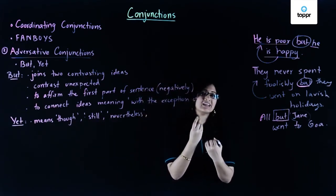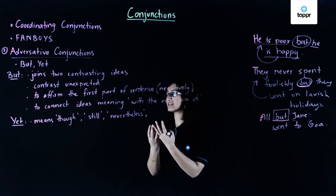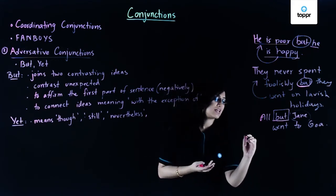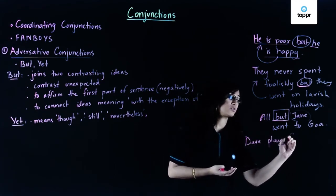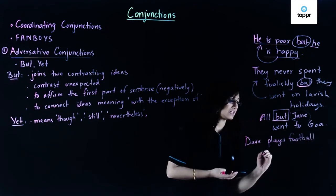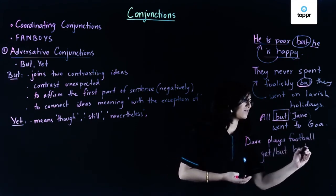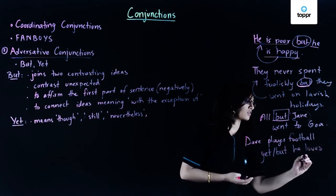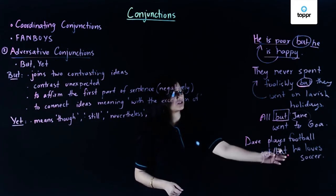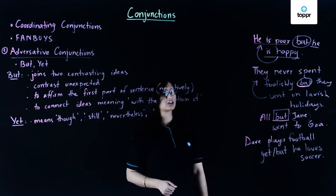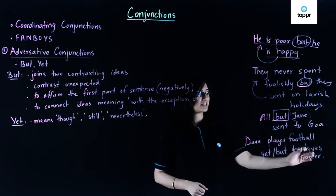So the contrast here is a little less similar to the use of but. Let's take an example of a sentence. Let's say Dave plays football yet and but he loves soccer. So here if I use the word but as the conjunction here, then it will be Dave plays football but he loves soccer.